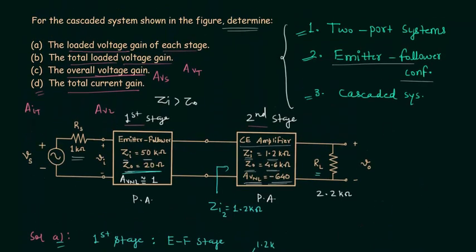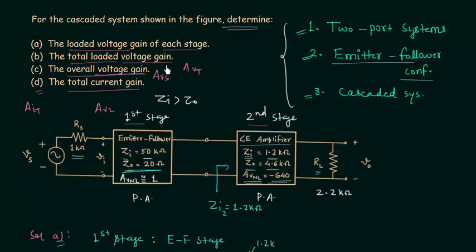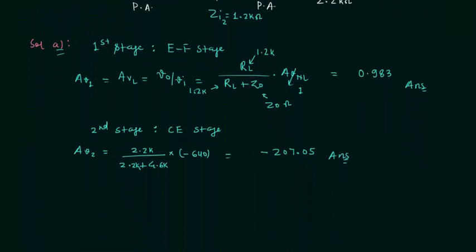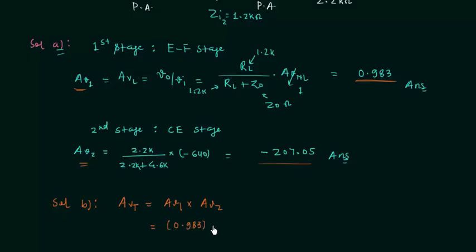Solution B: We calculate the total loaded voltage gain AVT. This is straightforward since we already have AV1 and AV2. AVT = AV1 × AV2 = 0.983 × (−207.05) = −203.53. This is the answer for part B.